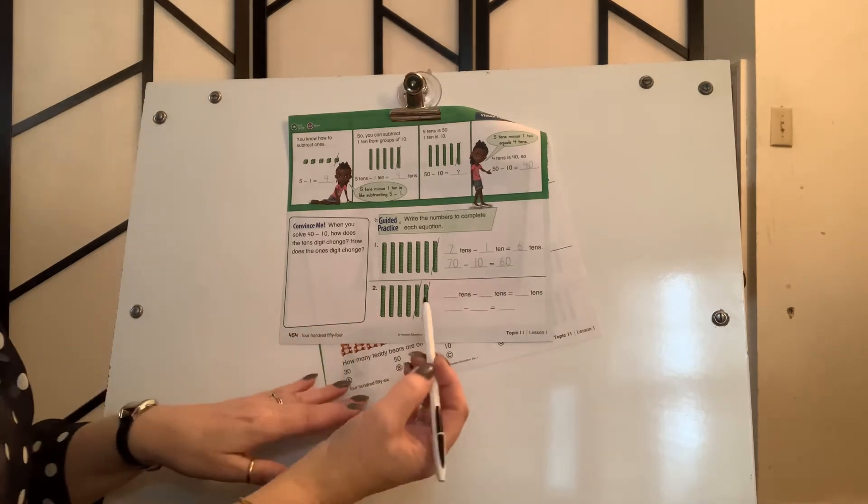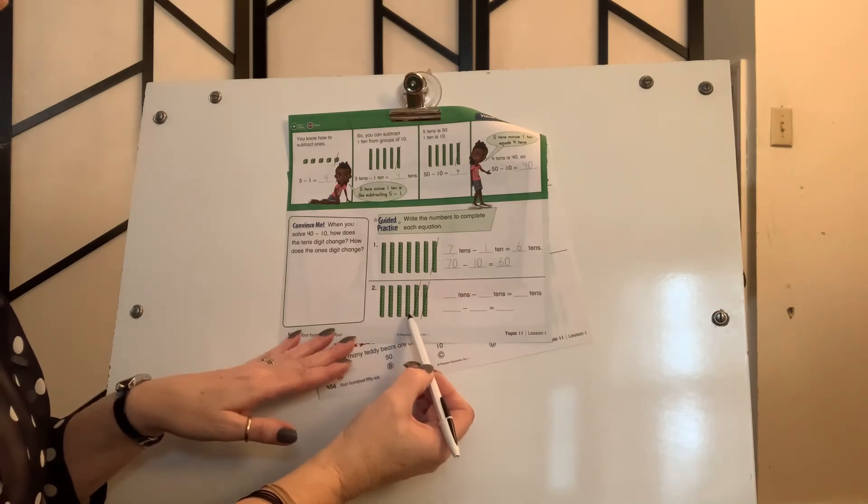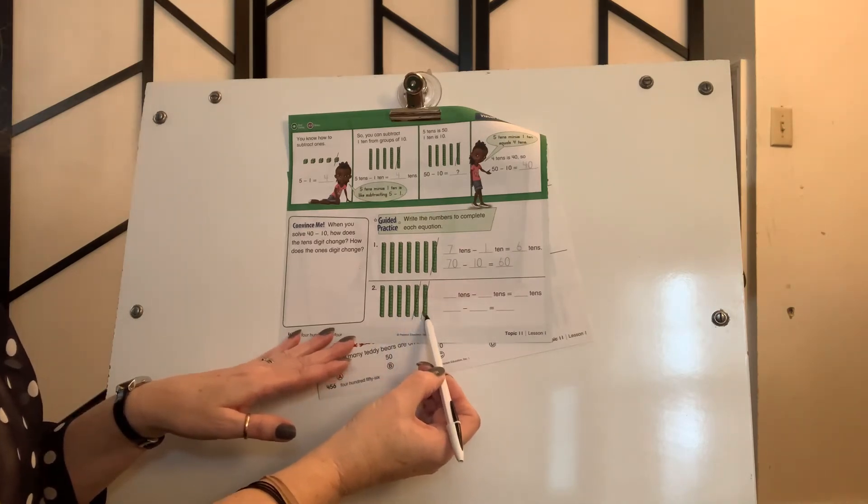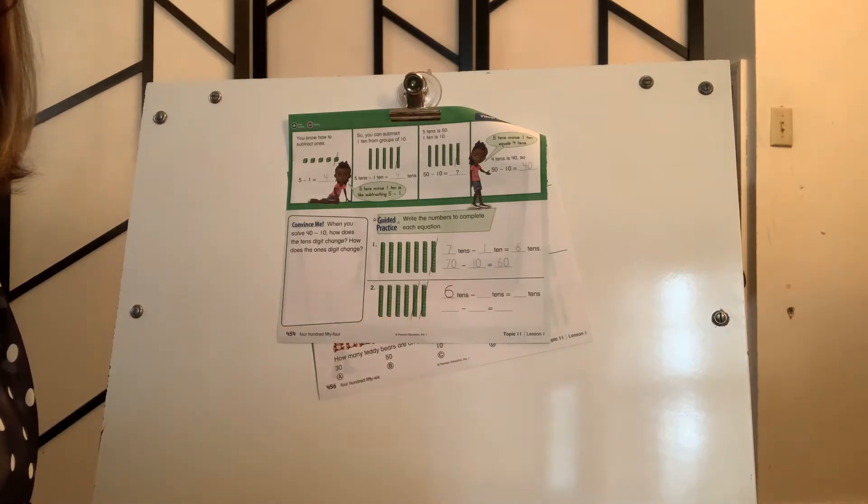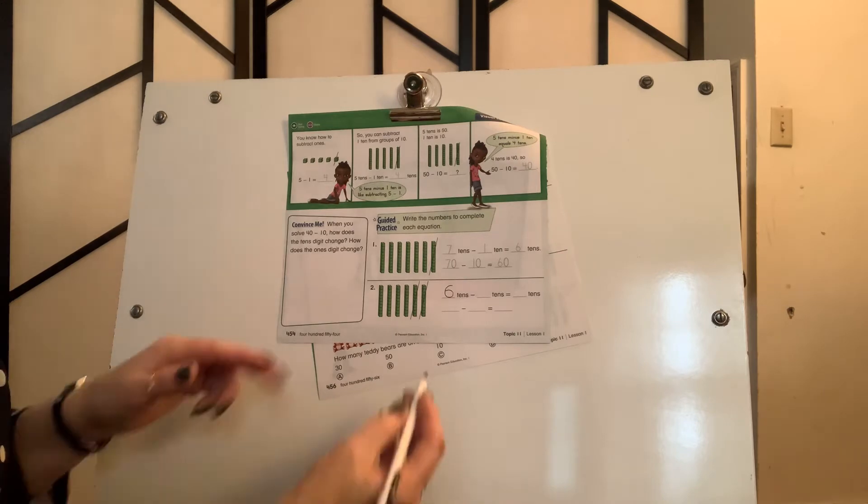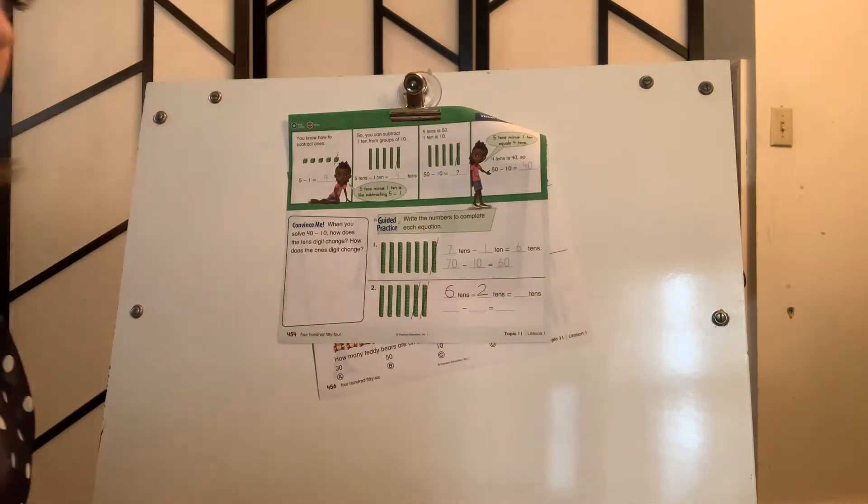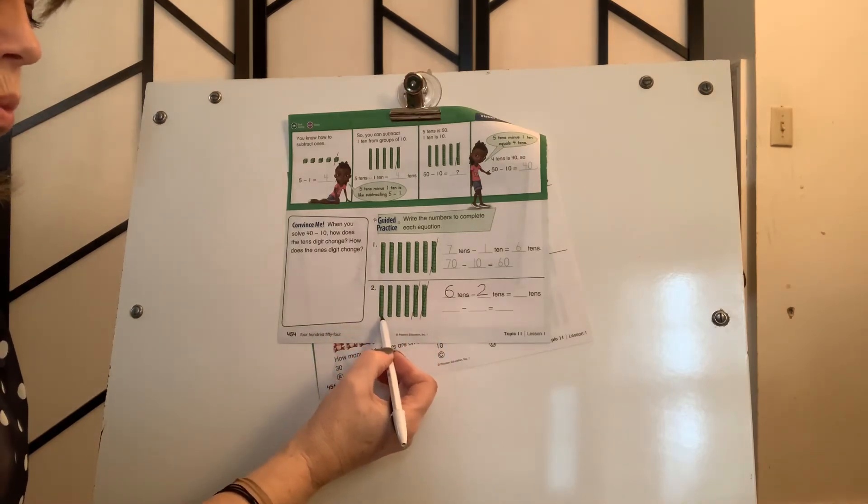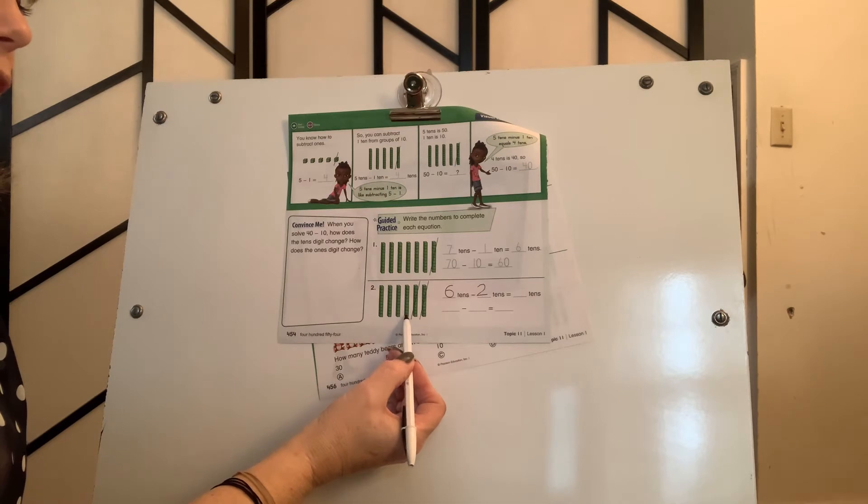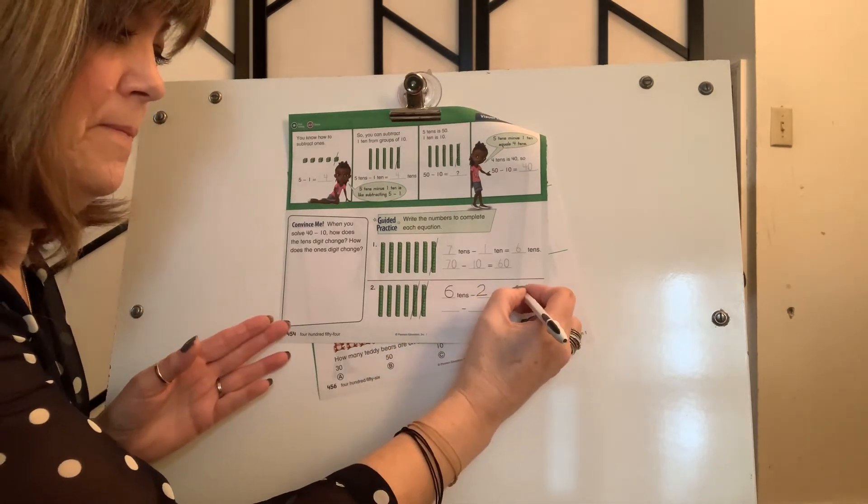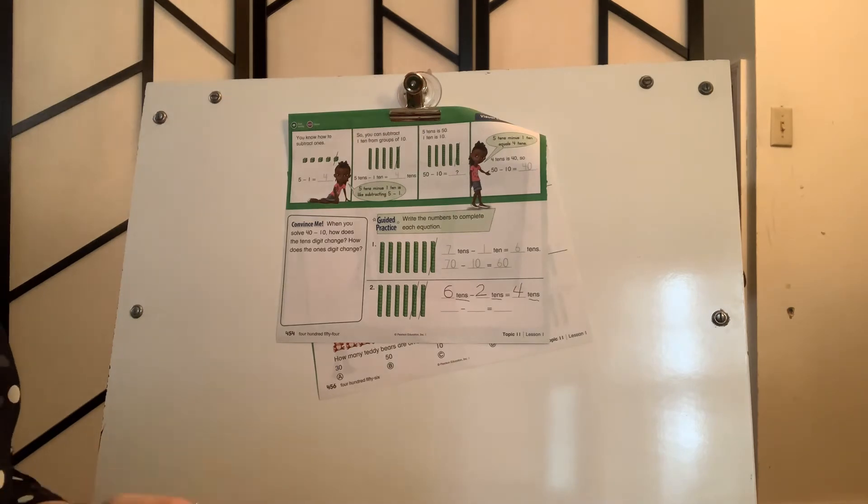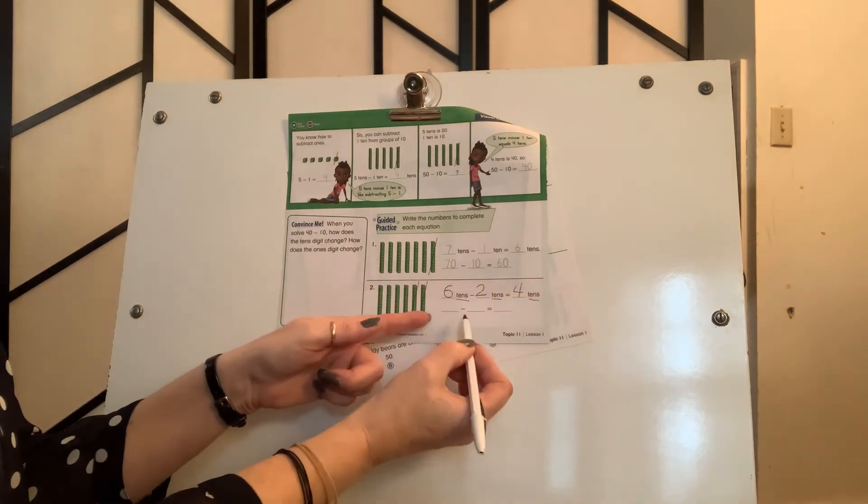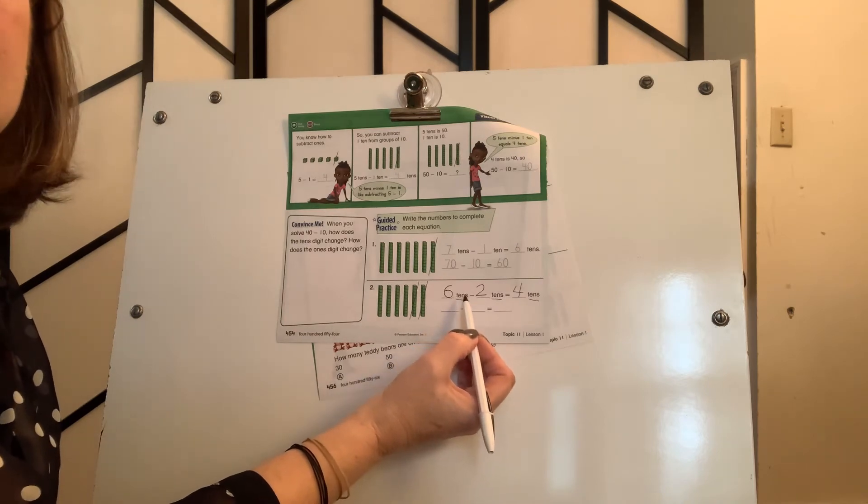All right. Let's try number 2 together. 1, 2, 3, 4, 5, 6. 6 10s. Okay. Now, how many did they cross off? JJ, can you see that for me? Correct. They crossed off 2 10s. And we're going to count the leftovers. 1, 2, 3, 4. Jersey, how many leftovers? 4. Now, do you see they added those words after each one? We're not just subtracting 6 minus 2 equals 4. We're actually subtracting 10s. So, now we're going to go back and we're going to tell what the number is.